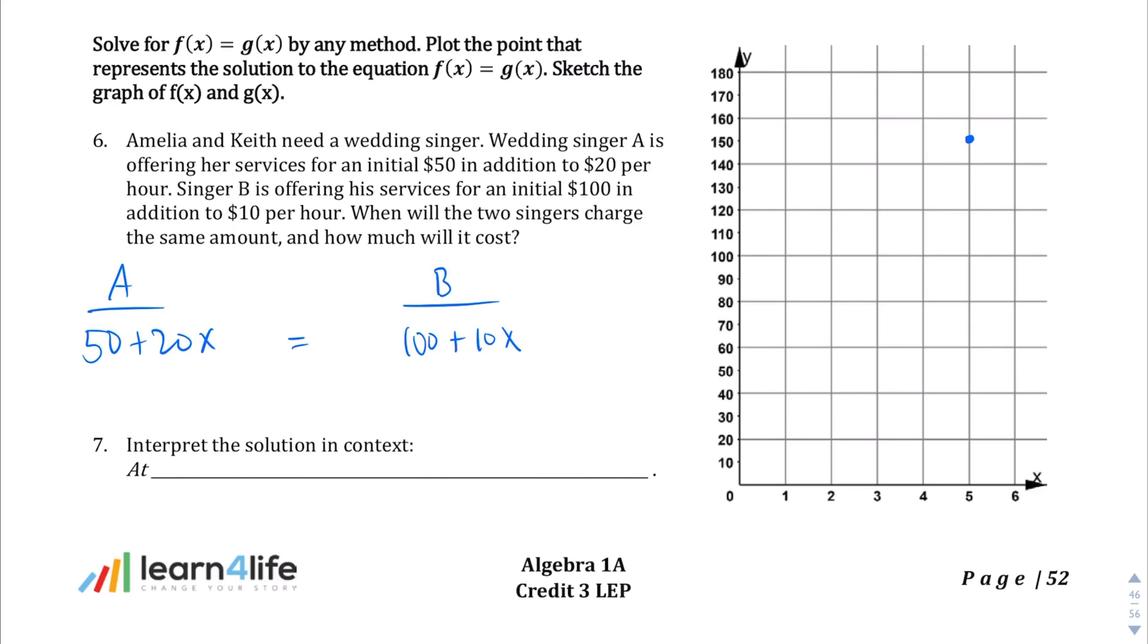And so, for A, let's see, our intercept would have been $50, to here. So this is the graph of Wedding Singer A. And then let's see, let's make Wedding Singer B into a green line. Wedding Singer B would have started at $100 fee and then gone from there and met right there. Okay. So, there's our answer. $5, 150. Now, we could have done this algebraically. We could have made tables. We could have done this any variety of ways. But we did it graphically. So, interpret the solution in context. What this means, what the $5, 150 means, is at five hours, both Wedding Singers will charge $150.